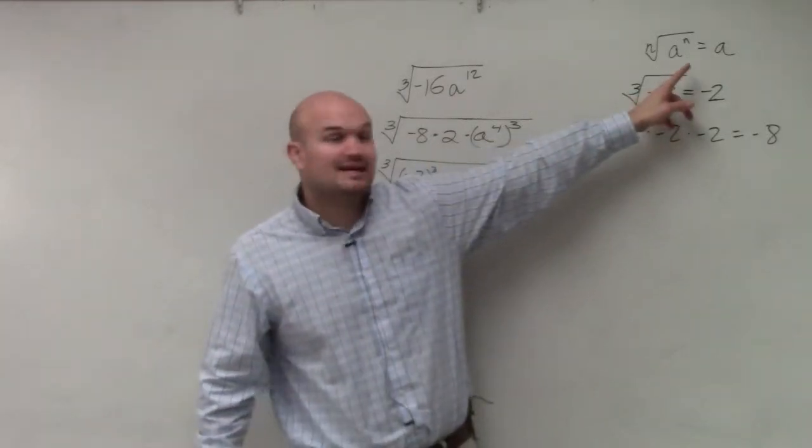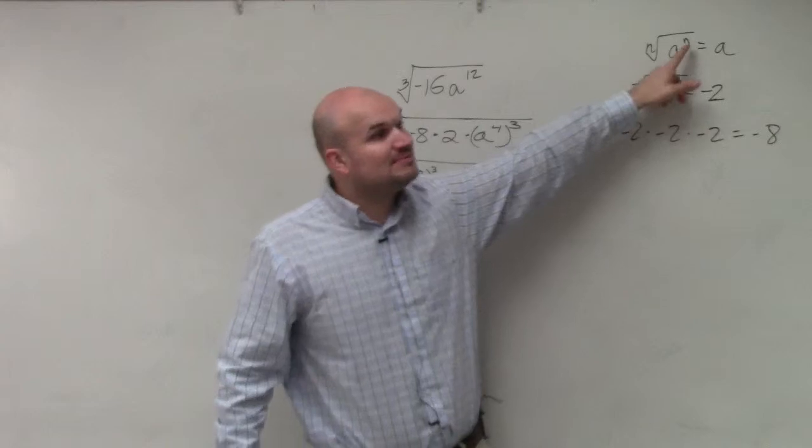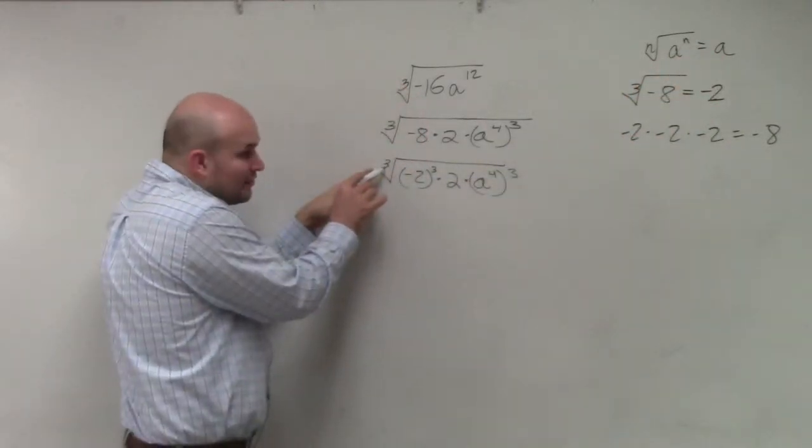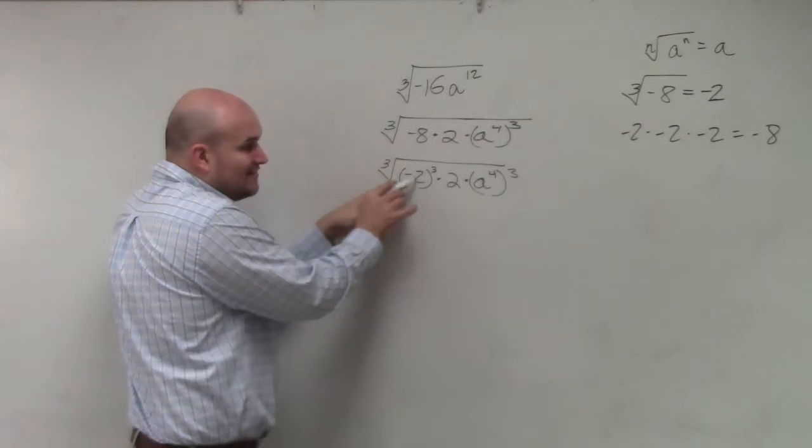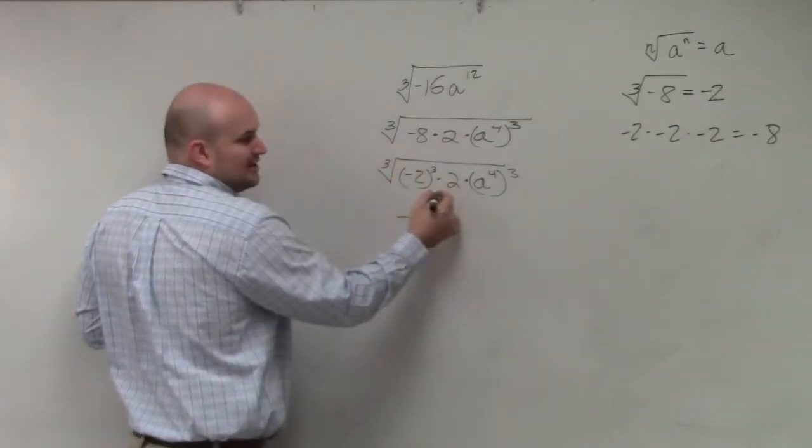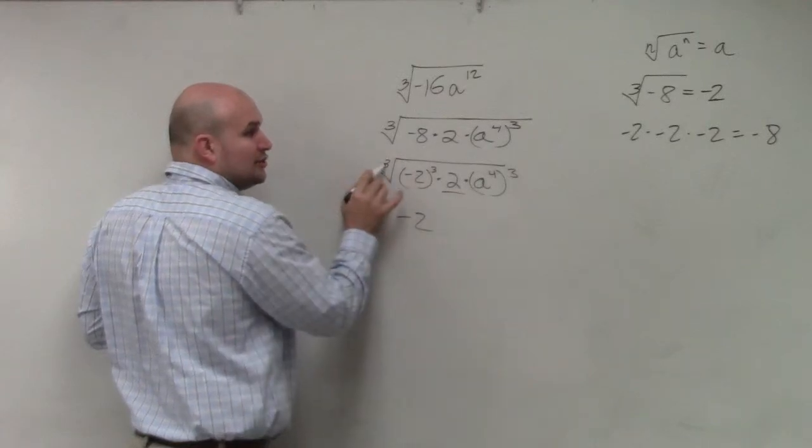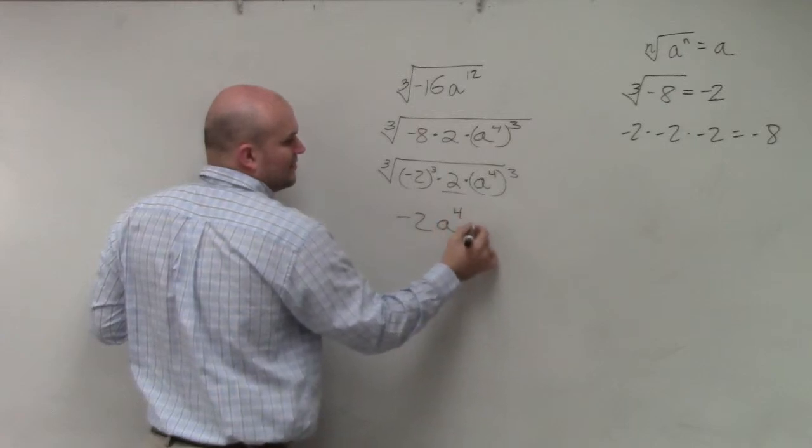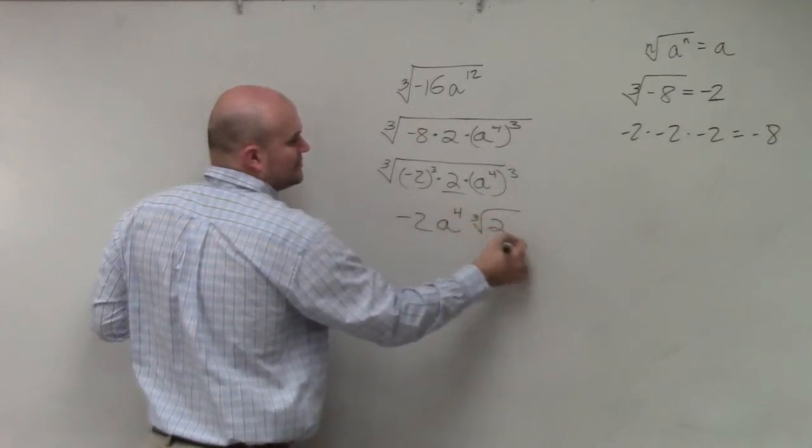Now, again, using my identity element. Whenever I take the nth root of something to the nth power, I just get a. The third root, or the cube root, of negative 2 cubed is just negative 2. I can't do anything with the 2, so that's going to stay there. The cube root of a to the fourth cubed is just a to the fourth. Then I have the cube root of 2.